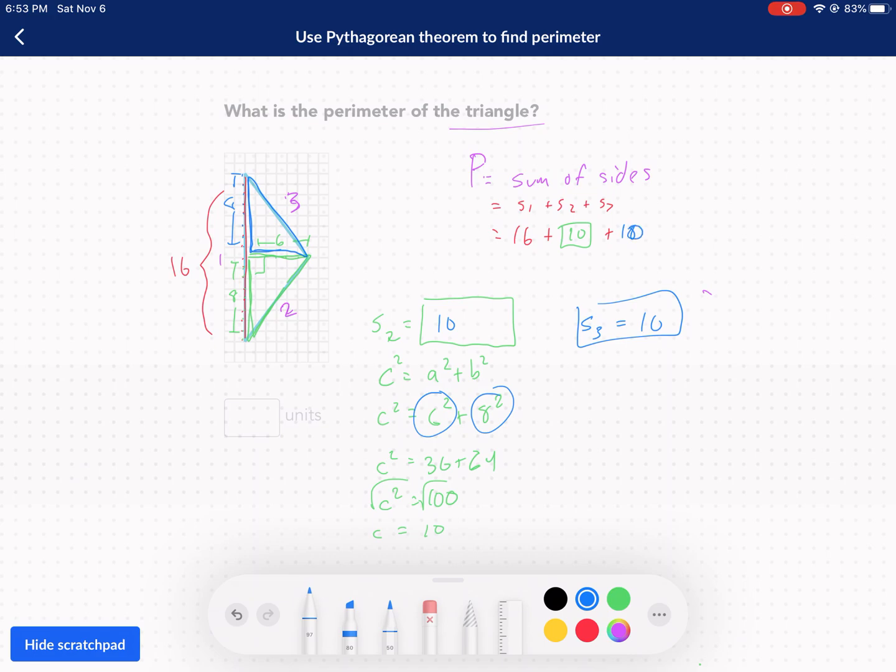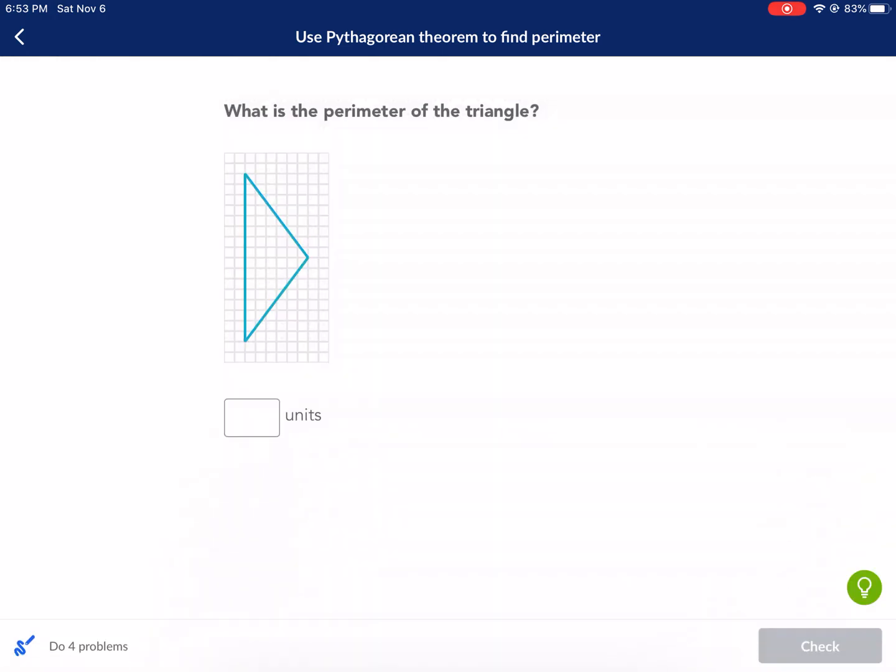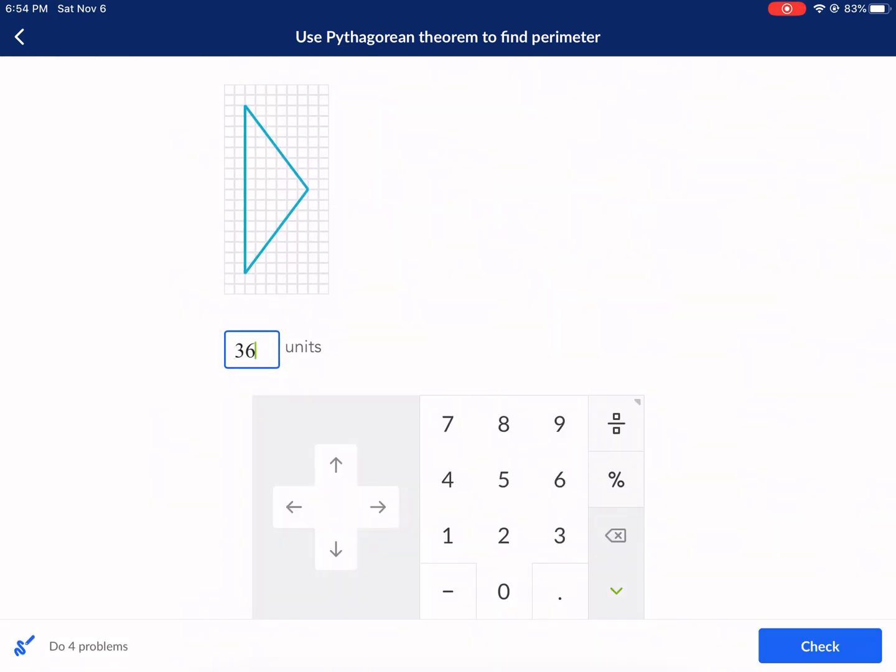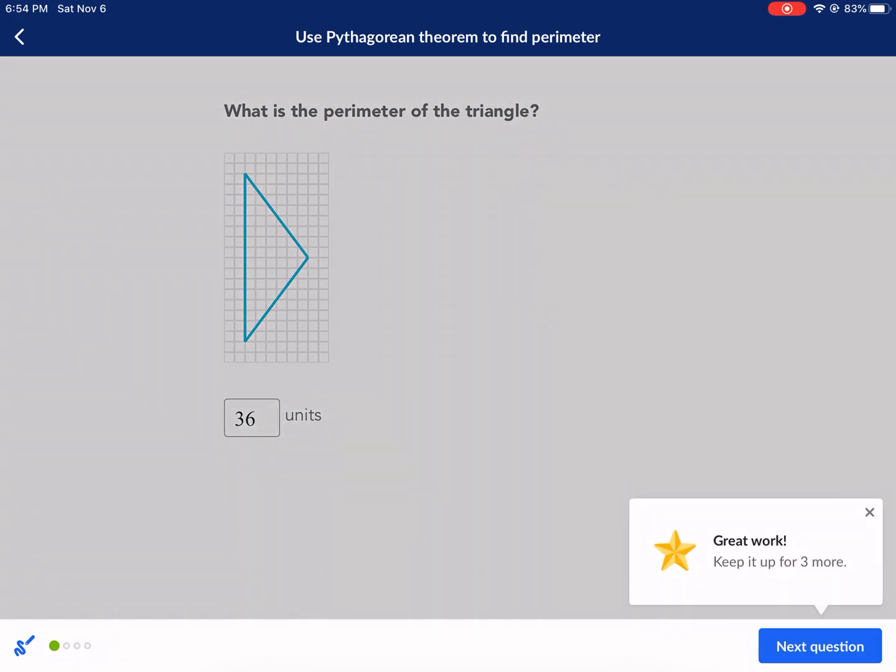Now it's just a matter of adding these all together. So that's 20 plus 16. That is 36 units. Perimeter is adding up all the lengths together of the triangle. So that's 36. And that should be good.